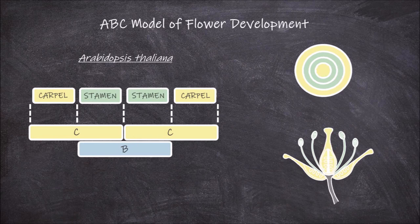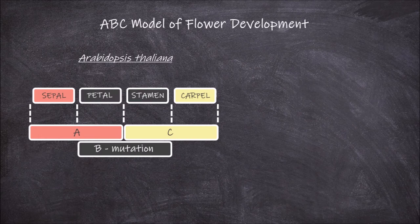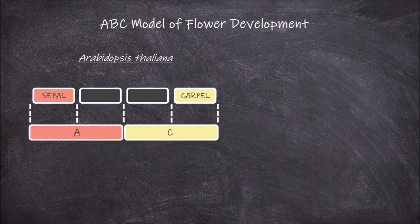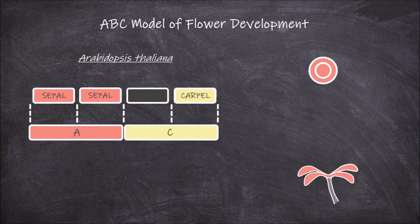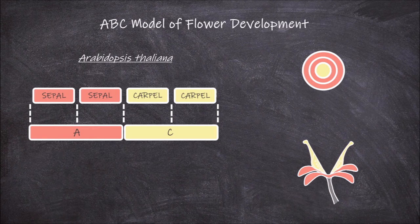In plants with mutations in the B genes, no petals or stamens develop, as both these require the expression of B genes in conjunction with other genes to develop. As in wild type plants, the first whorl is unaffected and still develops as the sepals. But because no B genes are expressed, a second whorl of sepals develops as the second whorl in place of what would have been the petal whorl. Instead of stamens, the third whorl develops into a carpal whorl. The fourth whorl stays unchanged and still develops as the carpals.